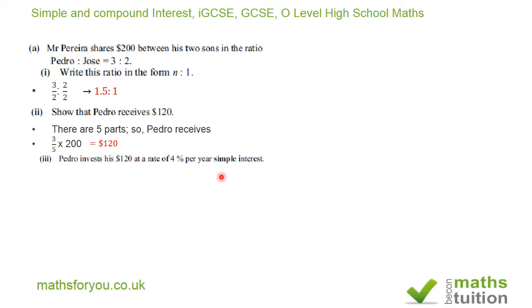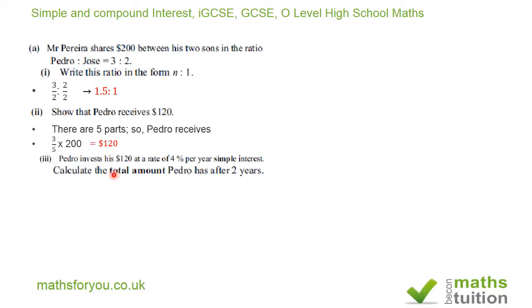Pedro invests $120 at a rate of 4% per year simple interest. Calculate the total amount Pedro has after 2 years. Note that the phrase 'total amount' is in bold, so we need the total amount, not just the simple interest.